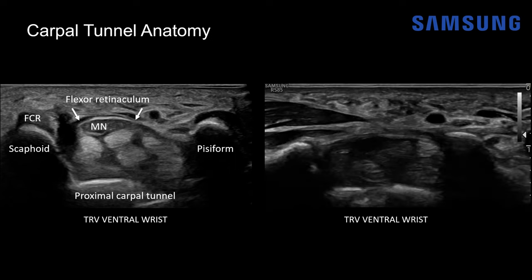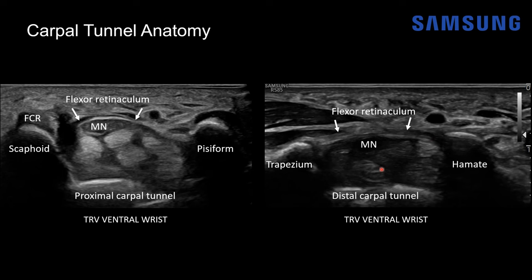Moving distally, instead of the scaphoid and pisiform bones we now have the trapezium and hamate bones. Again there's the flexor retinaculum, with the median nerve just deep to it and the flexor tendons beneath. You can see they're a bit more hypoechoic on this image — that's due to the artifact known as anisotropy. When the ultrasound beam hits the compact fibrillar structure of tendons at an angle less than 90 degrees, they become more hypoechoic. This can easily be corrected by toggling the transducer back and forth.